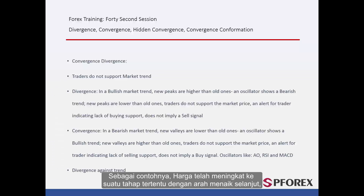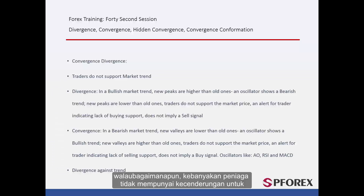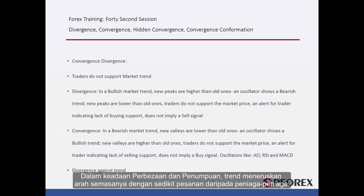For instance, price has increased to a certain level with further upward direction. However, most of the traders did not have a tendency to place a buy order anymore and some of them closed their orders. In a Convergence and Divergence condition, the trend continues its current direction with little orders placed by traders.